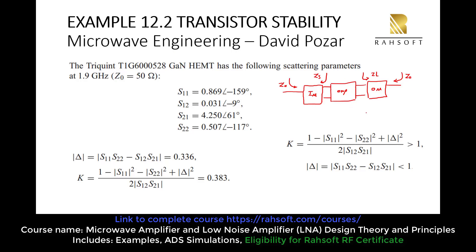We want to see if we have ZS at the input and ZL at the output of this amplifier, whether it is going to be stable with these terminations. That's why we start here — before designing the two matching networks — because we want to assure that if this amplifier sees ZS at the input or ZL at the output, it is going to remain stable.